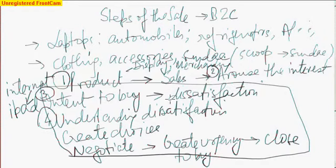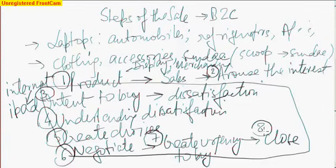After that, he uncovers the dissatisfaction. Whatever will be the dissatisfaction, he understands the dissatisfaction and proposes choices, creates choices for the customer. He then negotiates, creates the urgency to buy for the customer and closes the deal.